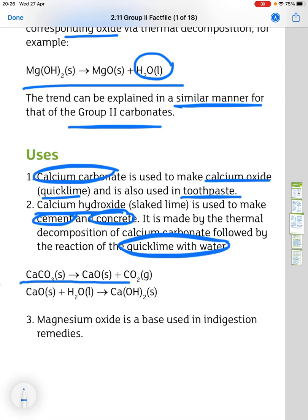So, thermal decomposition is shown first, CaCO3 gives CaO and CO2. And then the reaction of quicklime with water, calcium oxide, and water gives calcium hydroxide.